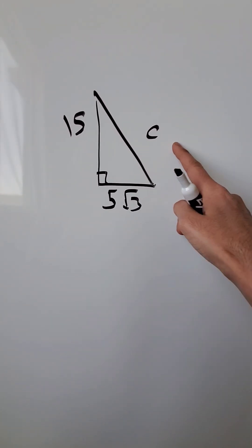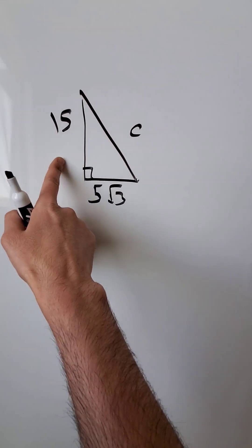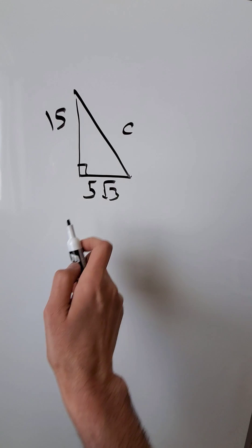We will have some fun here finding the value of c without using a calculator. 15, 5 root 3, what's c? It's a right triangle.